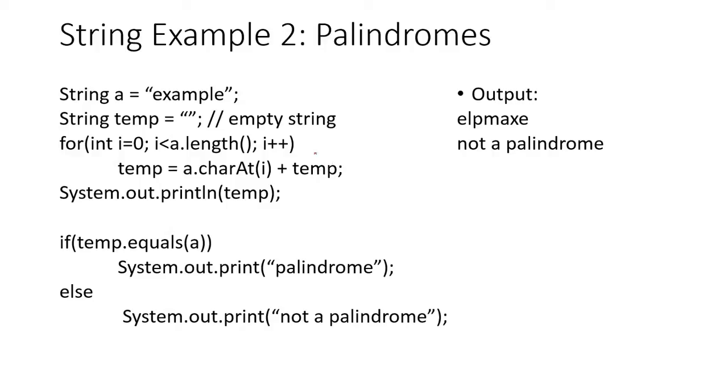So here's another example of using these string methods. Here we declare our string a and we set it equal to 'example.' And then we have a temporary string equal to the empty string. That's just two quotation marks back to back with nothing between them. That's commonly referred to as the empty string. Then next, we go from i equals zero to the length, and then we increment each time. So we're going to go through each and every character.